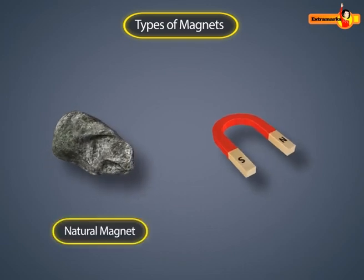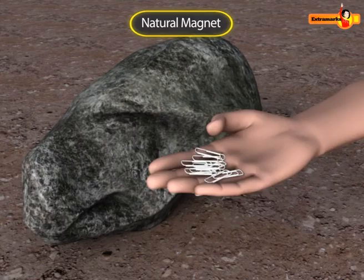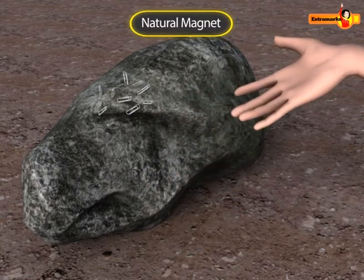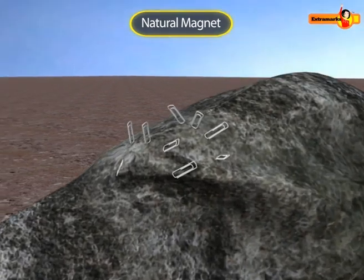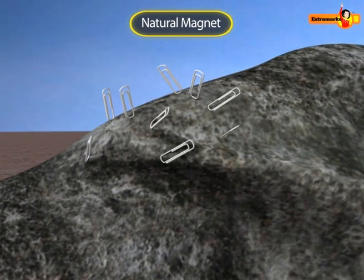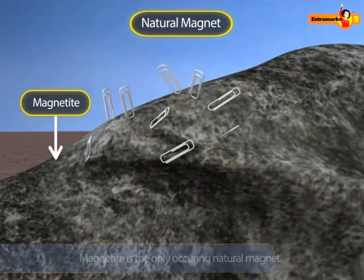Natural and artificial. Natural magnet is a material which occurs naturally and has magnetic properties. Magnetite is the only naturally occurring magnet.